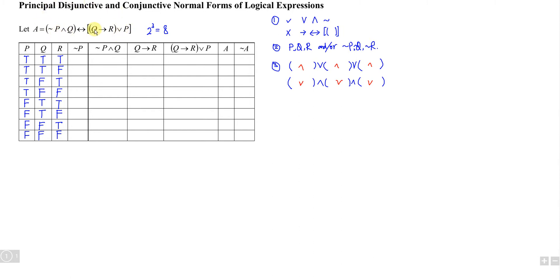After filling the table, we refer to the expression. We have several brackets to split. The first bracket is NOT P and Q, so we open columns for NOT P, and NOT P ∧ Q. Then we have another bracket: Q implies R. Then Q implies R disjunction with P. The last part connects them with if-and-only-if, giving us expression A.